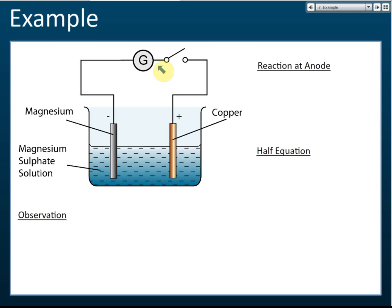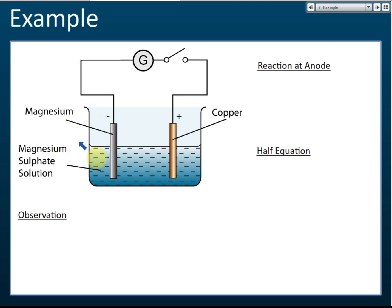In a simple voltaic cell, there must be two pieces of metal plates — these two metal plates must be different metals. You cannot use magnesium and magnesium, or copper and copper. You must use different metals, like magnesium and zinc, or magnesium and aluminium. These two metals are immersed in an electrolyte — in this case, magnesium sulfate solution. But you can use any electrolyte; it doesn't necessarily have to be magnesium sulfate. You can use sodium chloride or other electrolytes.